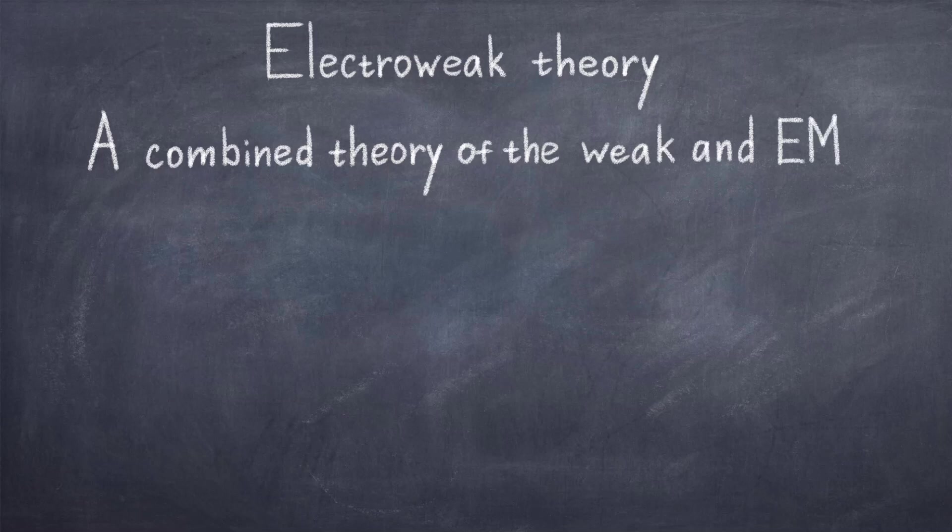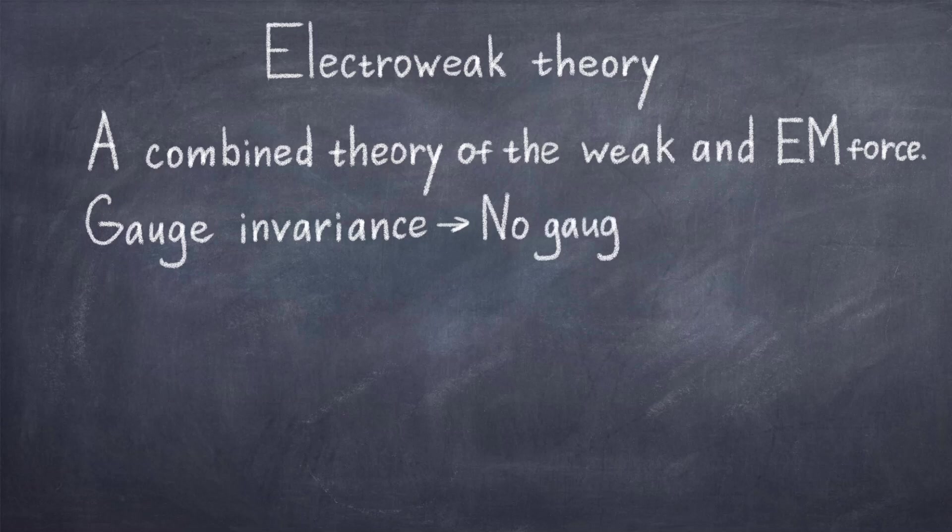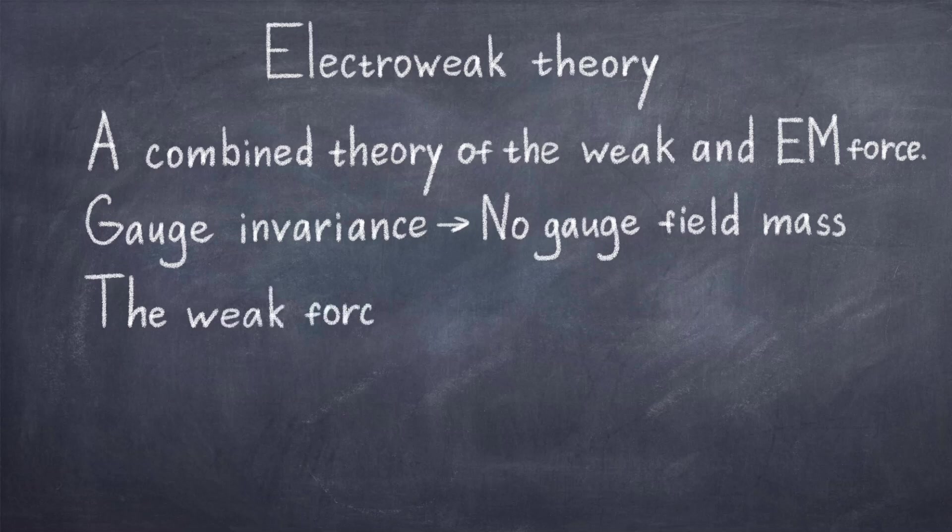In fact, this electroweak theory contains all the information of the weak force and the electromagnetic force combined. The simple way of explaining why you cannot write a Lagrangian for the weak force in a similar way to the electromagnetic force is because of gauge invariance. We discussed this a bit in the video about fundamental forces, but the essential part is that to keep gauge invariance means that you are not allowed to have explicit mass terms of your gauge field, in other words, your force carriers must be massless.